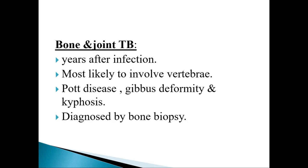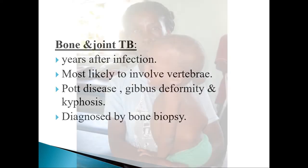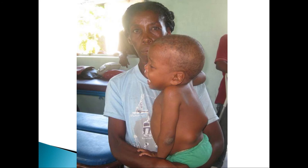Bone and joint tuberculosis occurs years after infection, most likely involving the vertebrae, forming what is called Pott's disease with gibbus deformity and kyphosis, diagnosed by bone biopsy. This is a photo of a patient with Pott's disease of the spine — kyphosis is very clear, and this is the gibbus deformity.